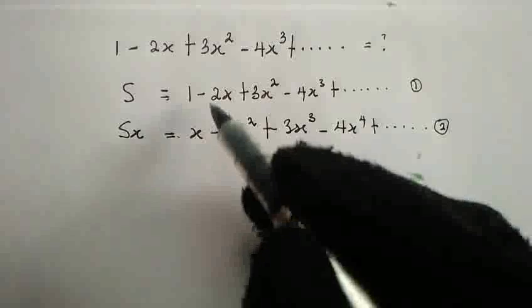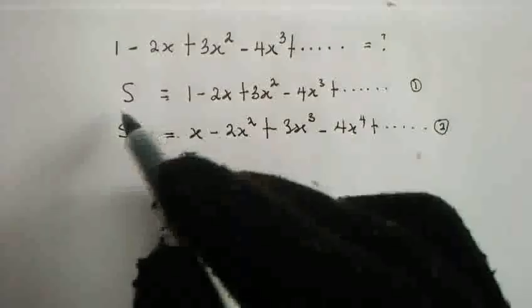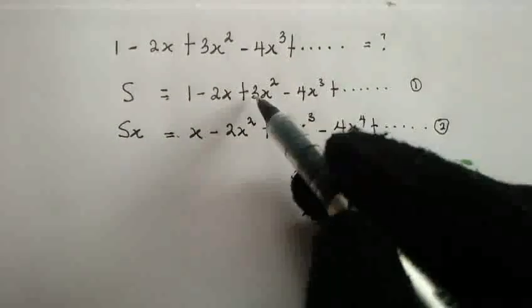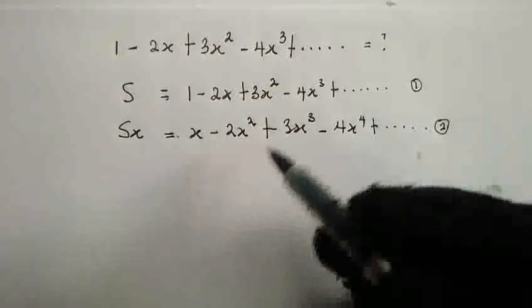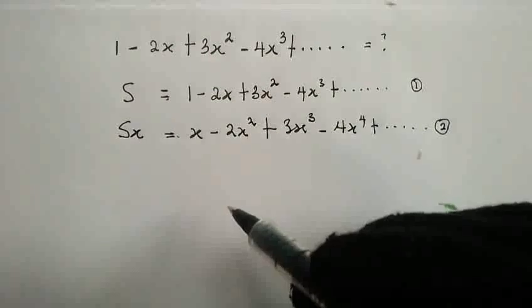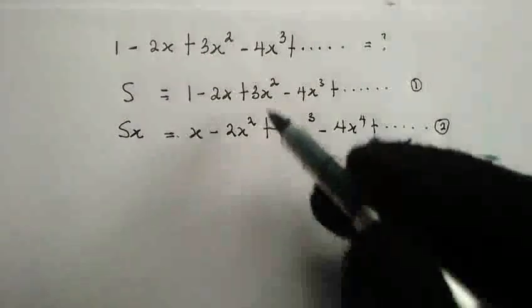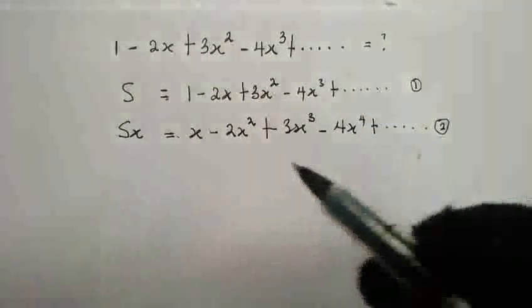Minus 2x minus x is minus 3x. Here, 3x squared minus minus 3x squared is 5x squared. And this is not making sense at all. Let me try to add both equations and see the outcome.